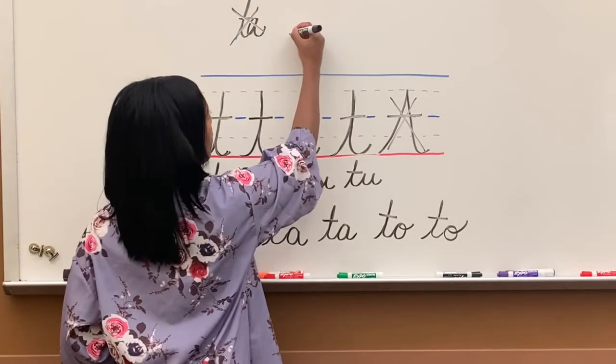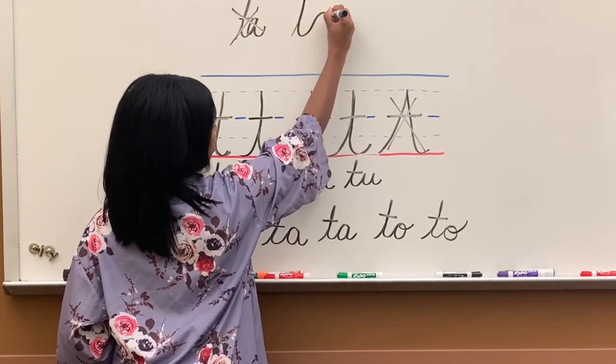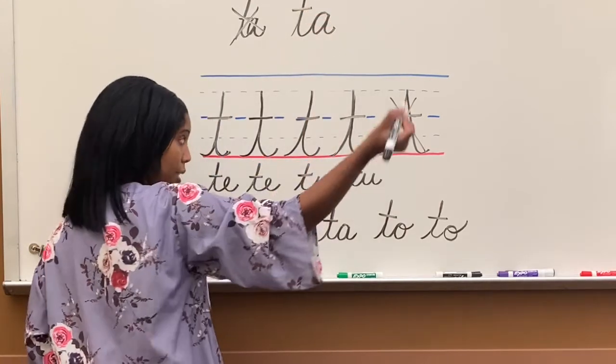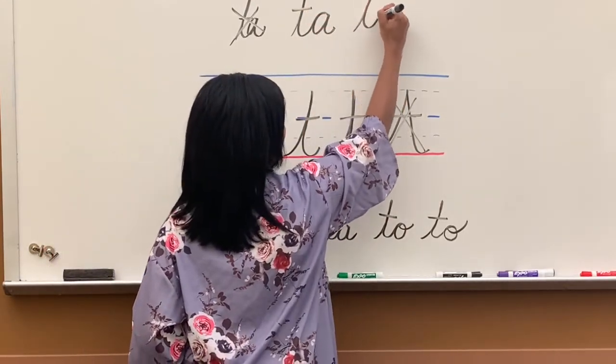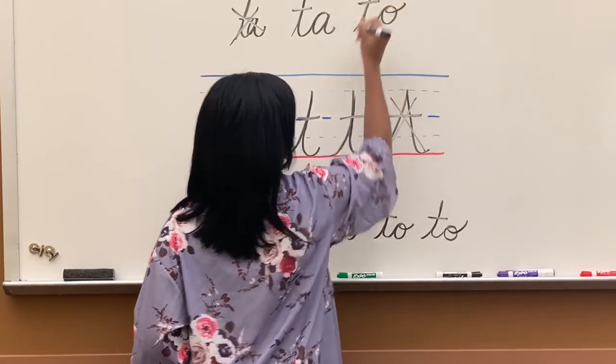Again, I'm going to show you up here. So this is T, then halfway to do A, around, close it, then T-O, T, halfway around to do O, then close it, and cross.